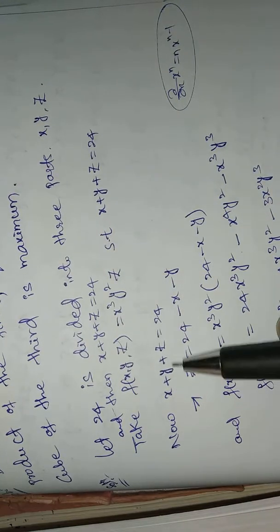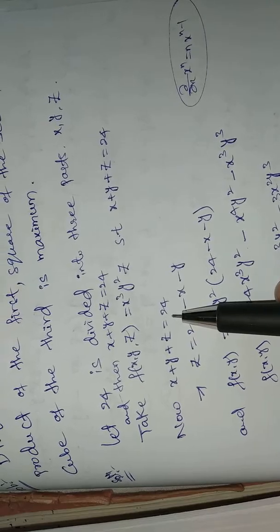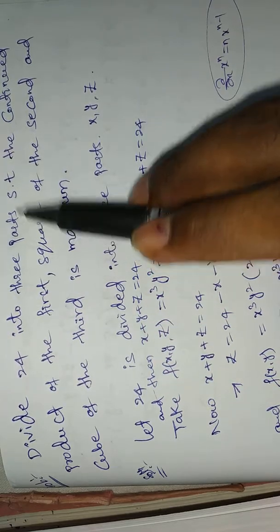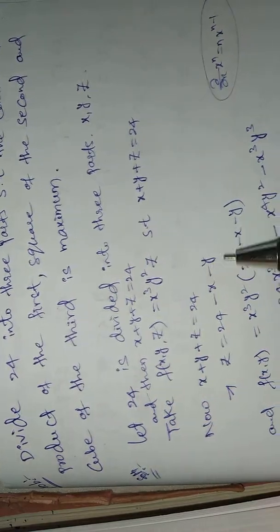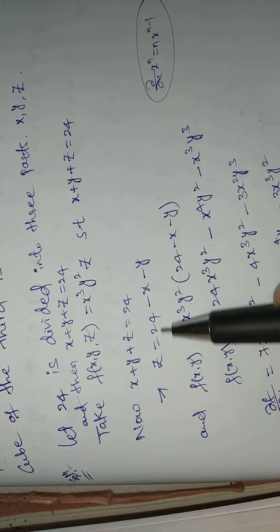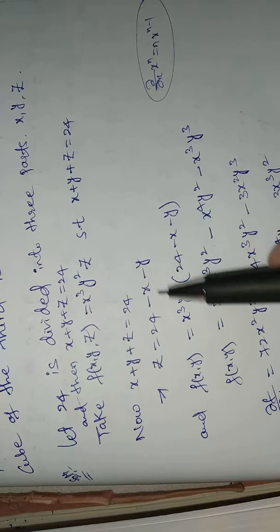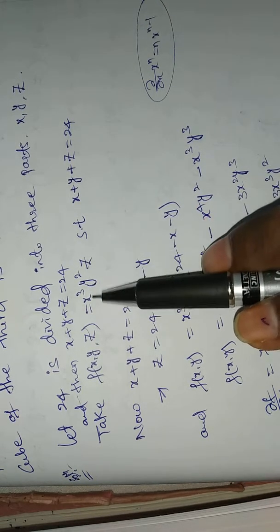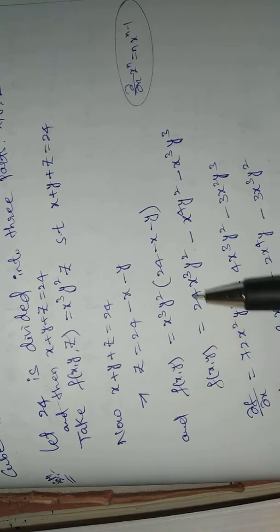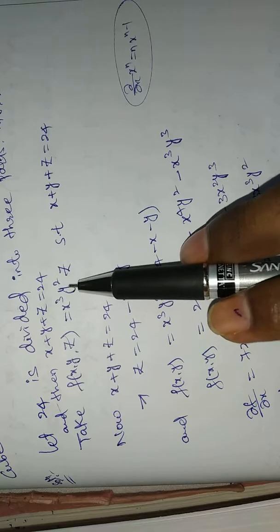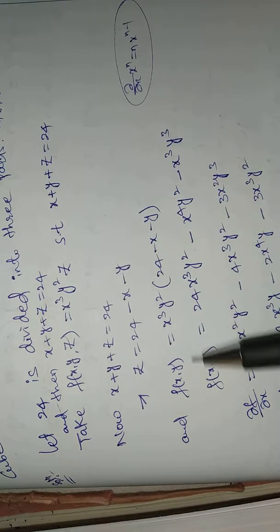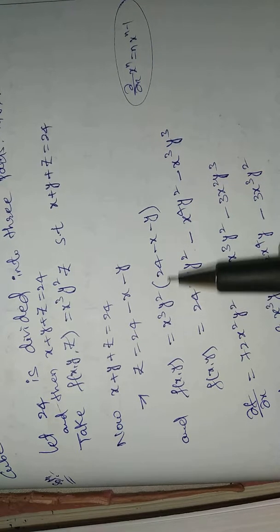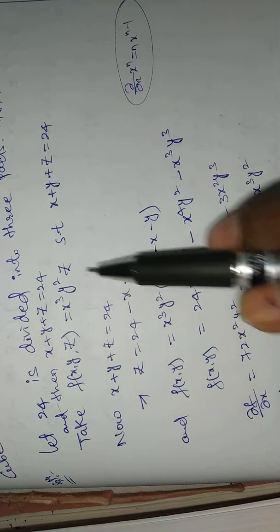Since we have three variables x, y, and z with constraint x plus y plus z equals 24, we solve for z: z equals 24 minus x minus y. Substituting this into f(x, y) reduces the problem to two variables only: f(x, y) equals x cubed times y squared times (24 minus x minus y).